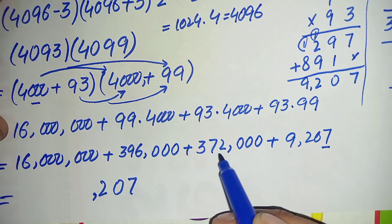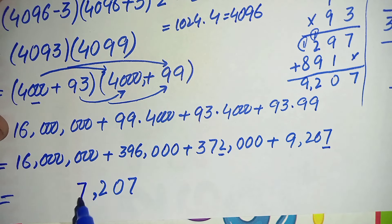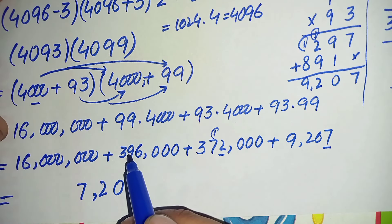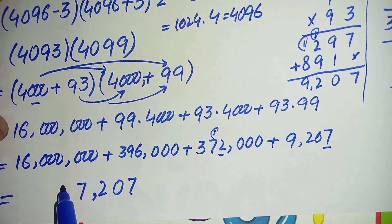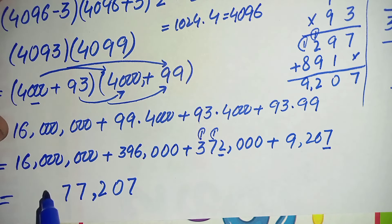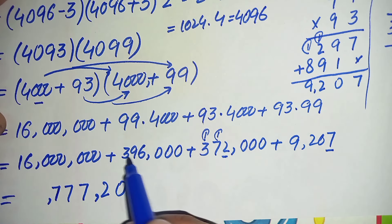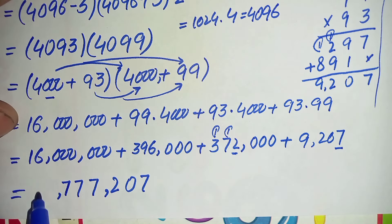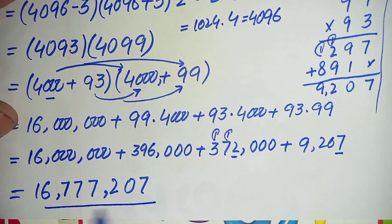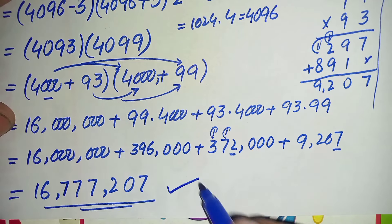Continuing the addition: 9 plus 2 is 11, plus 6 is 17 — write 7, carry 1. Then 7 plus 1 is 8, plus 9 is 17 — again write 7, carry 1. Then 3 plus 1 is 4, plus 3 is 7. So we get 777 thousand and 207, plus the 16 million from earlier.